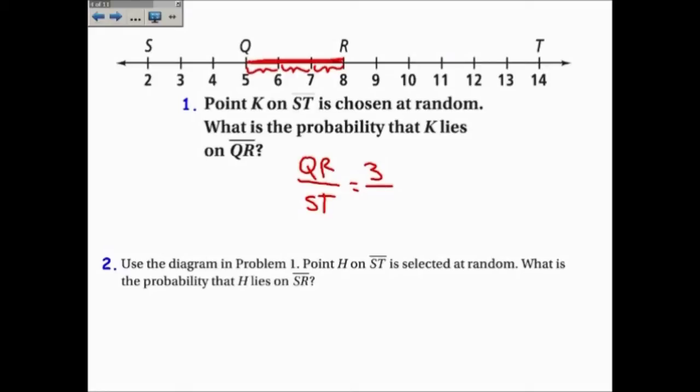Now, the length of ST is 14 minus 2, or 12. So 3 twelfths simplifies to be one-fourth, and so the probability of point K being on QR is one-fourth.